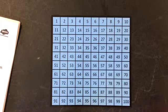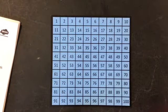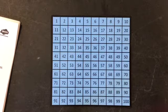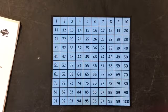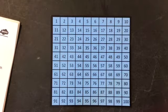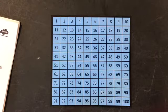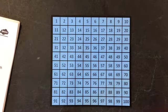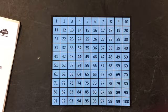I wonder if you noticed a pattern when we were counting in fives. Have a think. What do the numbers end in when we count in fives? There are only two numbers that are the same at the end when we are counting in fives. Can you work out what they are? Tell an adult if you have worked it out.